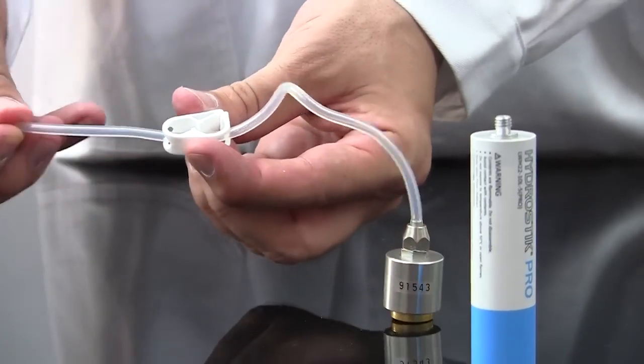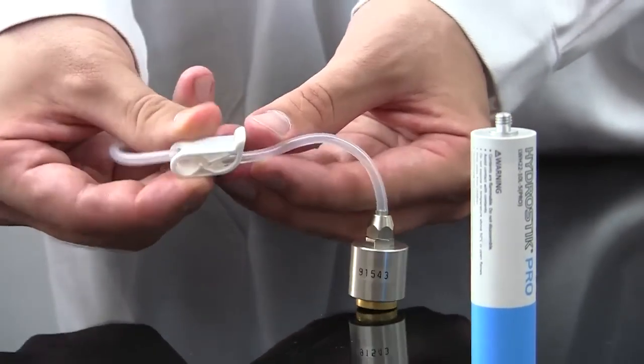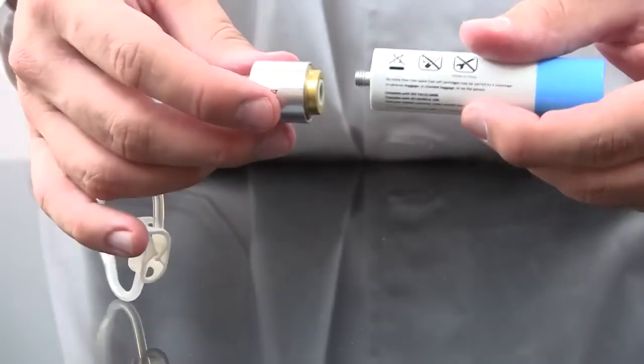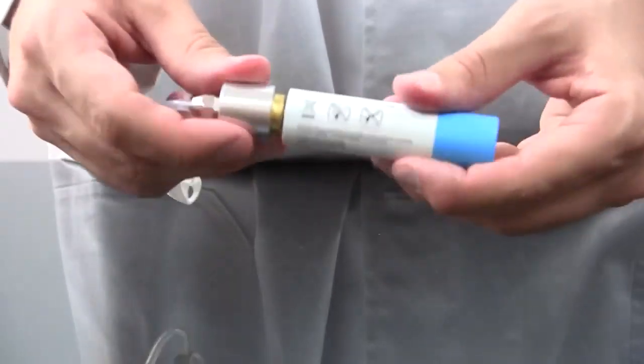Then use the plastic clamp to clamp the tubing. After that, screw the regulator onto the top of the hydrostick and you're ready to go.